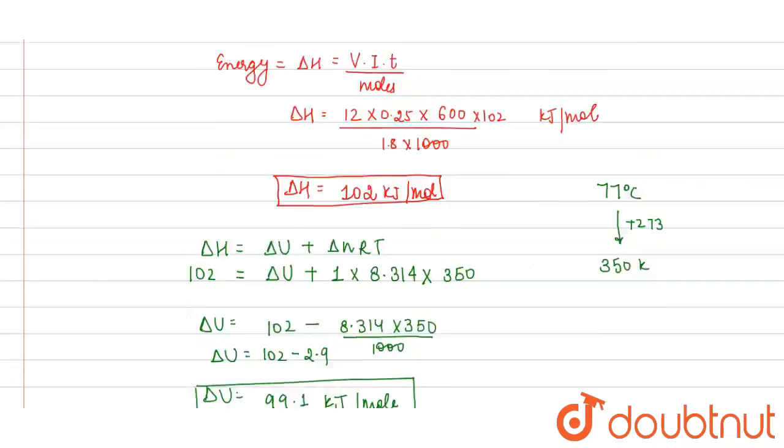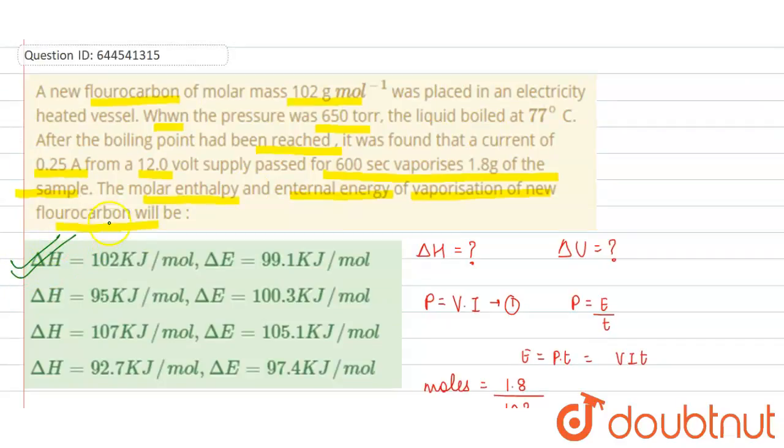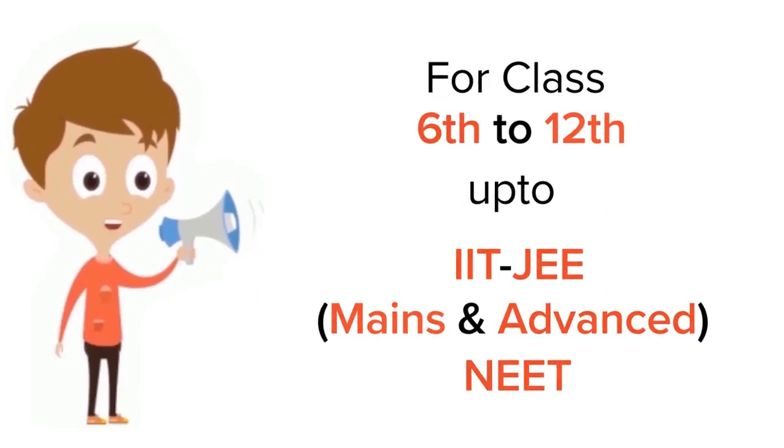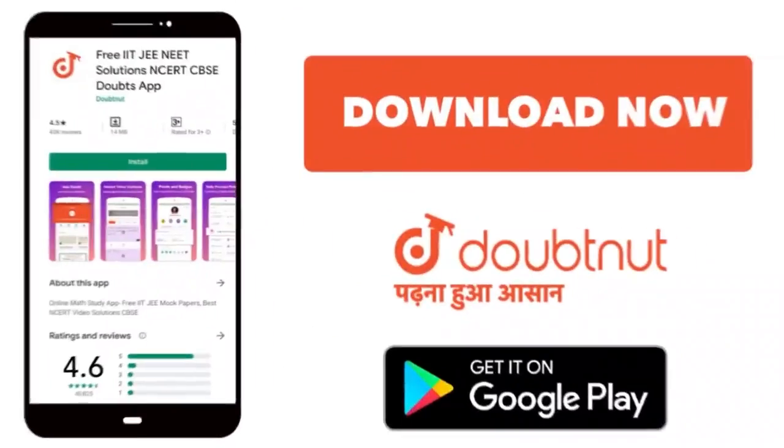Now check out the option which one is correct. Option A is correct. Thank you. For class 6 to 12, IIT-JEE and NEET level, trusted by more than 5 crore students, download Doubtnet app today.